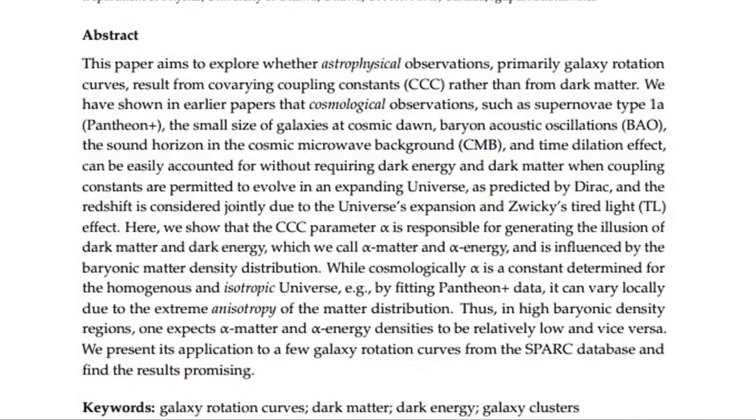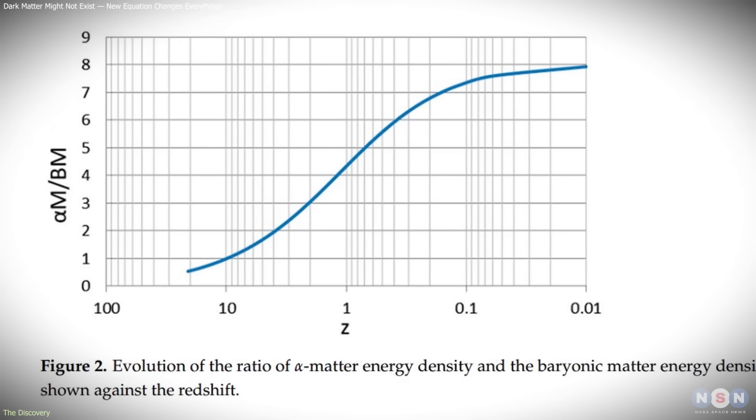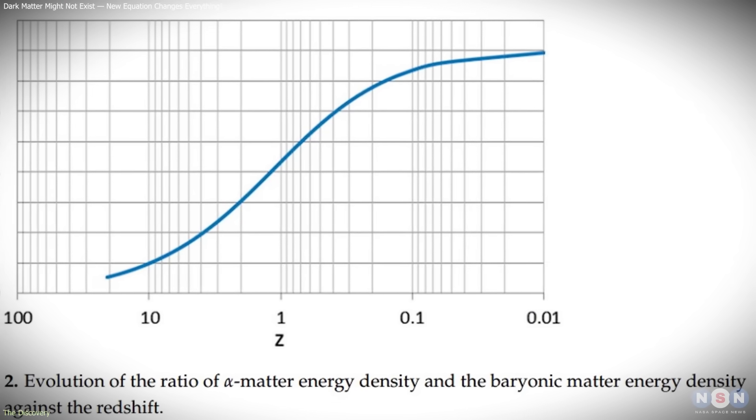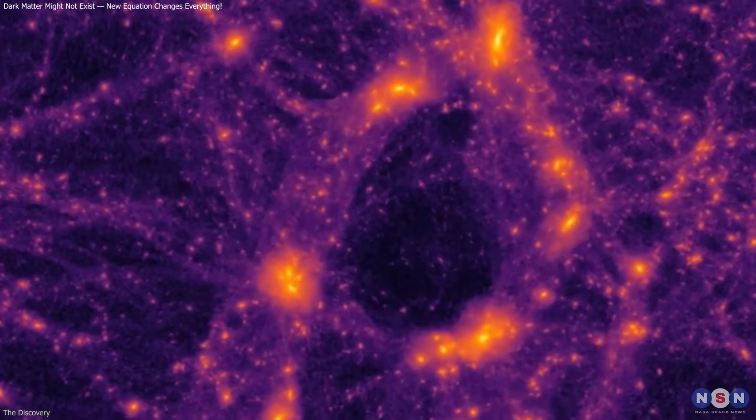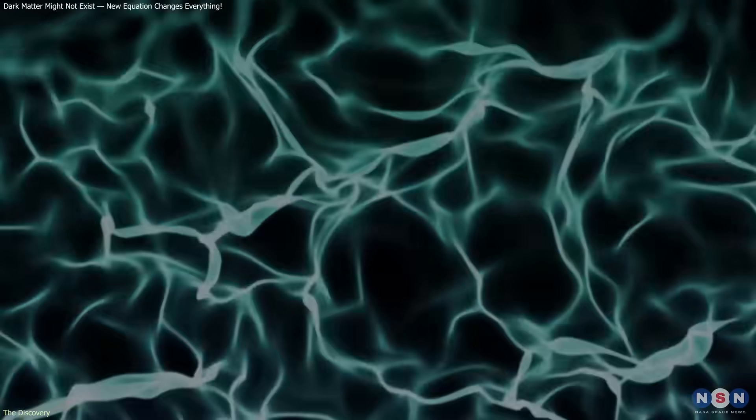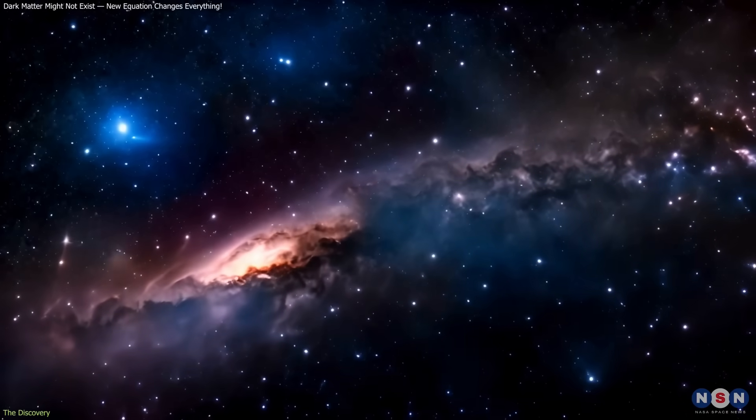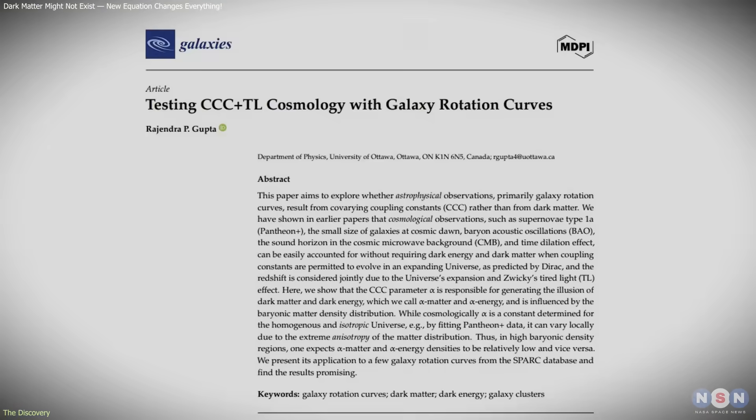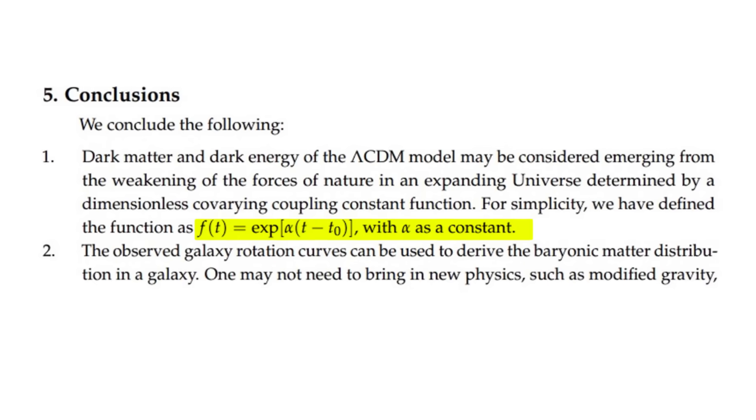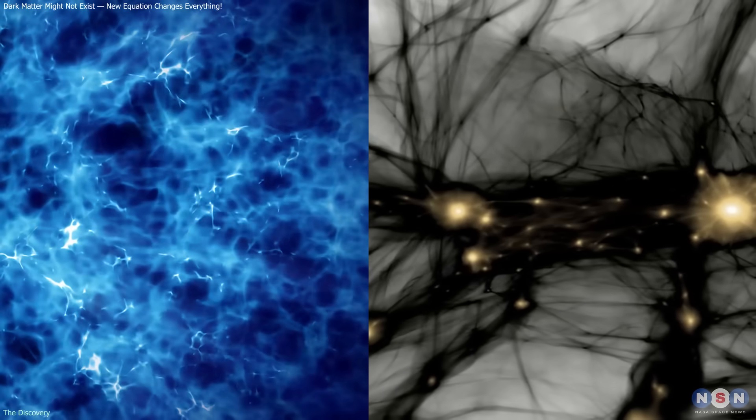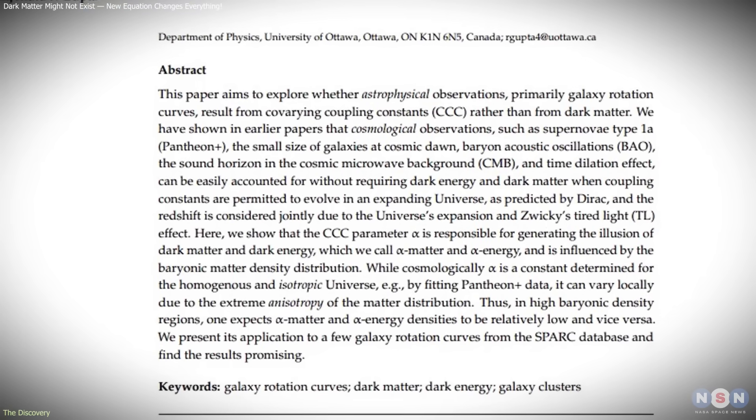In Gupta's model, this time dependence gives rise to a new mathematical factor called alpha. This term behaves like an adjustment to the strength of gravity, changing across both space and time. On a cosmic scale, where matter is distributed evenly, alpha acts like a gentle repulsive force—what we've been calling dark energy. On smaller, galactic scales, it enhances gravity slightly in regions filled with stars and gas, mimicking the pull of dark matter. The beauty of the idea lies in its unification: one principle, one equation, explaining both phenomena. Rather than treating dark matter and dark energy as separate mysteries, Gupta's theory interprets them as two aspects of the same evolving universe.